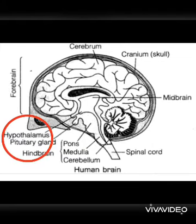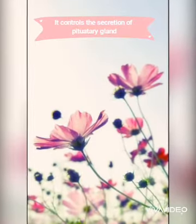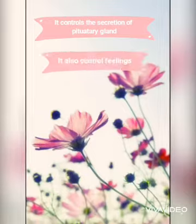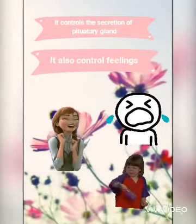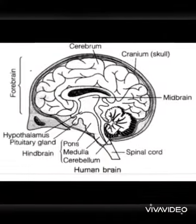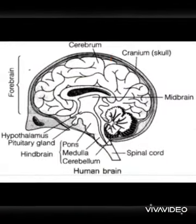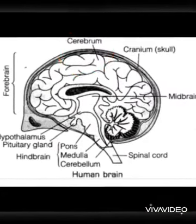The hypothalamus lies above the midbrain and just below the thalamus. In humans, it is roughly the size of an almond. It controls the secretion of the pituitary gland and also controls feelings such as anger, pleasure, and sorrow.